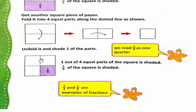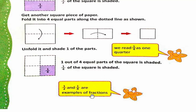Total parts kitne hain? One, two, three, four — woh denominator. Aur shaded parts kitne hain? One — so woh numerator. So our fraction is one by four. Ya one by four of the paper is shaded. We read one by four as one quarter. One by four ko hum one quarter bhi kehte hain. Ab one by two aur one by four fractions ki examples hain.